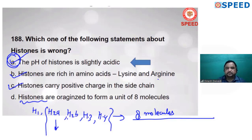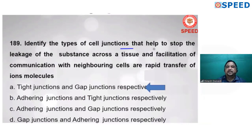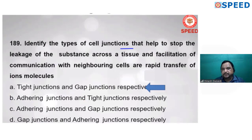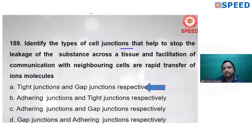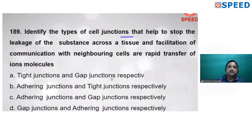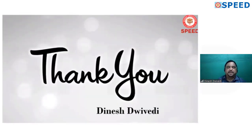Identify the type of cell junction that helps to stop the leakage of substances. Cell junctions are found in animal cells. Tight junctions occur between nerve cells (brain cells) and gap junctions occur between heart cells, connected by pipe-like structures known as connexons. Both tight junction and gap junction are the correct cell junctions. Alternate A is correct.